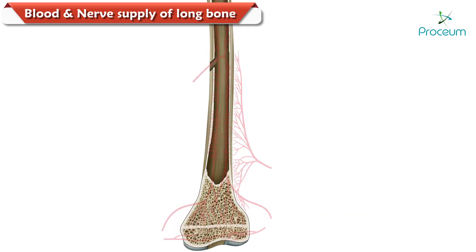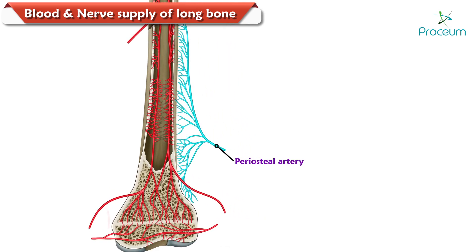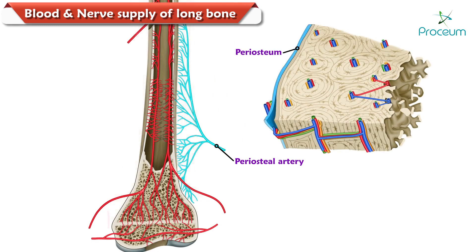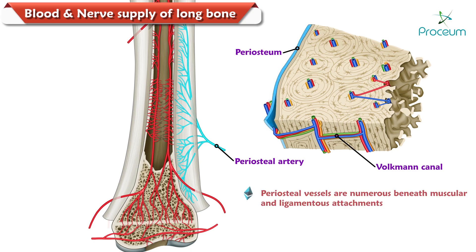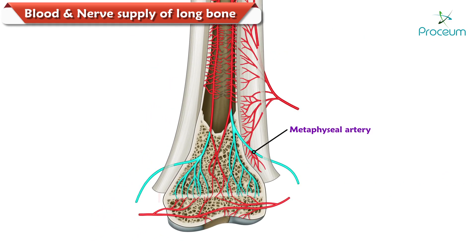The veins are numerous and cancel as bones. Coming to the periosteal arteries: they are numerous in number and ramify beneath the periosteum. They enter the bone through Volkmann's canal to supply the outer one-third of the cortex. The periosteal vessels are especially numerous beneath the muscular and ligamentous attachments.